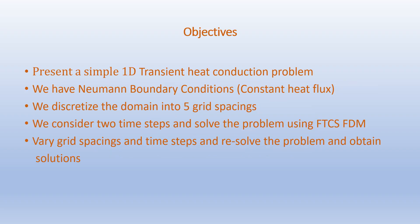Our objectives are to present a simple 1D transient heat conduction problem with Neumann boundary conditions, that is constant heat flux at the boundaries. We will discretize the domain into five grid spacings, consider two time steps, solve the problem using FTCS, then vary the grid spacings and time steps and resolve the problem to obtain solutions.